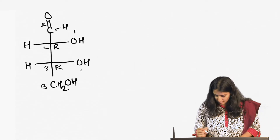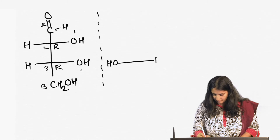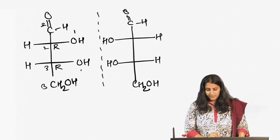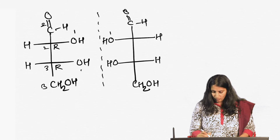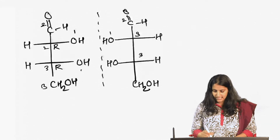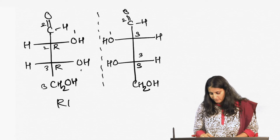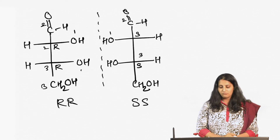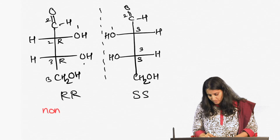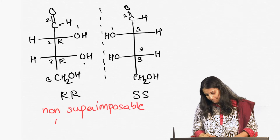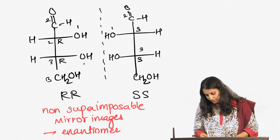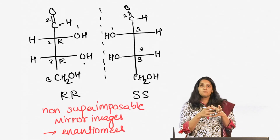Now let us draw its mirror image. In the mirror image: one, two, three moves like R but the hydrogen is coming towards you, so it is S, and the bottom one is also S. So I have a molecule RR and I have one molecule that is SS. If you look at these two molecules, they are non-superimposable mirror images — they are enantiomers.